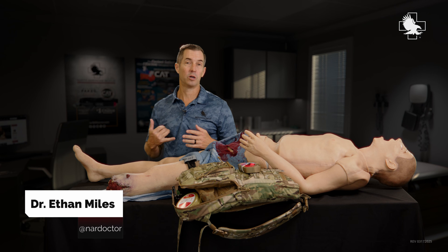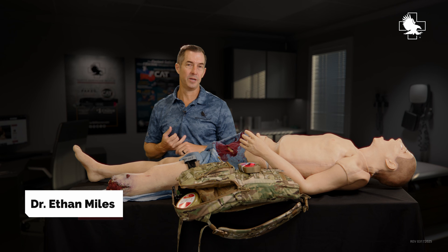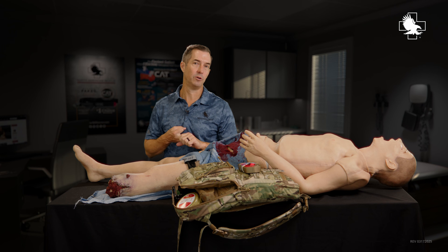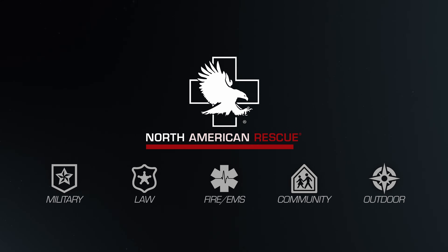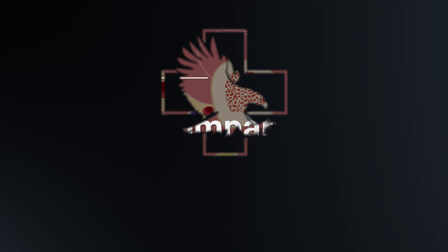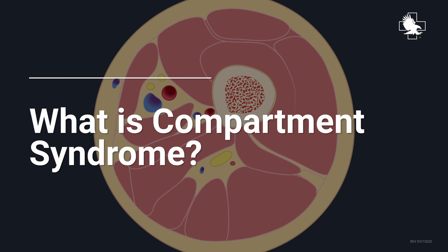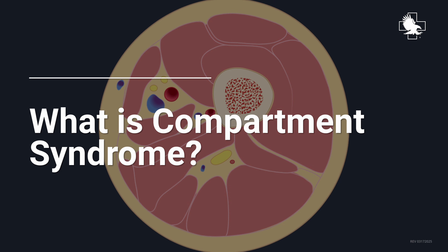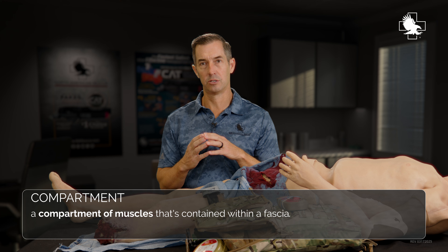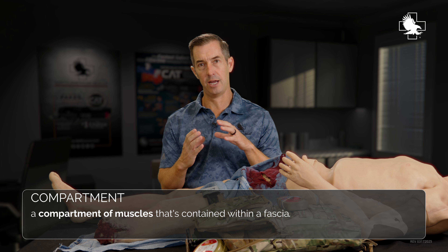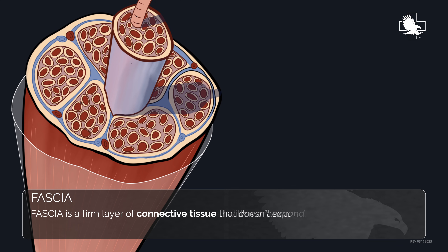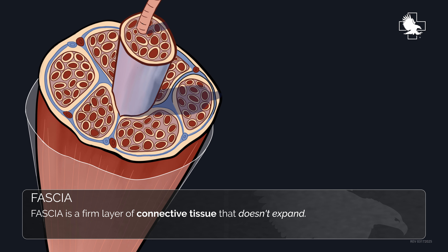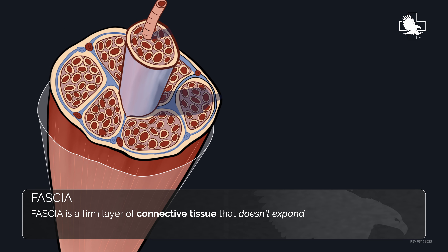So here's a quick breakdown of what compartment syndrome is, what causes it, and how it's treated. The compartment they're referring to in compartment syndrome is a compartment of muscles contained within a fascia. Fascia is a firm layer of connective tissue that really doesn't expand.